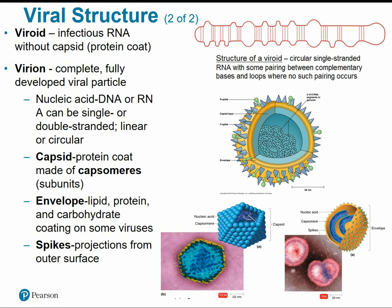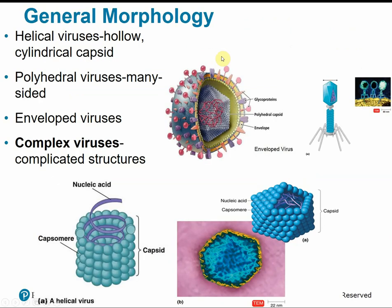When a host cell is infected by a virus, the immune system produces specific antibodies against the surface proteins of that virus. However, many viruses can escape antibody detection because the genes that code for their surface proteins are subject to mutation, changing the protein shape so that prior antibodies no longer recognize them. This is why we have to get new flu shots every year — the flu shot from last year won't be effective against this year's strain.